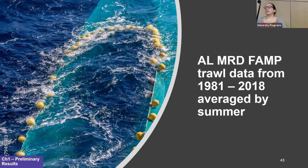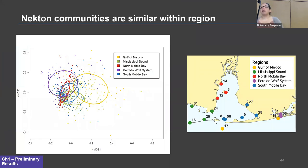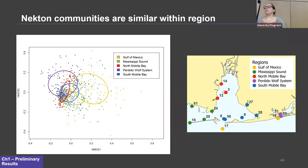We used the Alabama Marine Resources Department Fisheries Assessment and Monitoring Program trawl data spanning from 1981 to 2018. To make the data more manageable, I took the average abundance for each species by year and only included the months of April through September in that average, to cover recruitment and times of high density but exclude some seasonal variability. This nonmetric multidimensional scaling plot shows each point representing the necton community at one station for one year, with the station map included for reference.